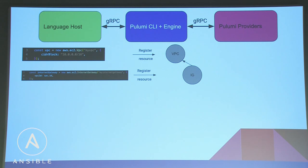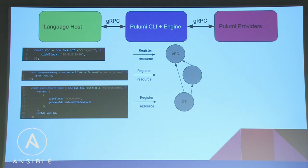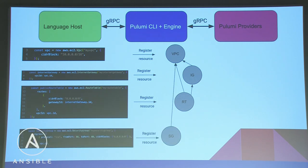Next is the route table — on line 15 we reference the internet gateway ID, and on line 18 the same VPC ID. That makes the route table point to two other resources in the graph. Finally, the security group only points to the VPC, completing the graph.